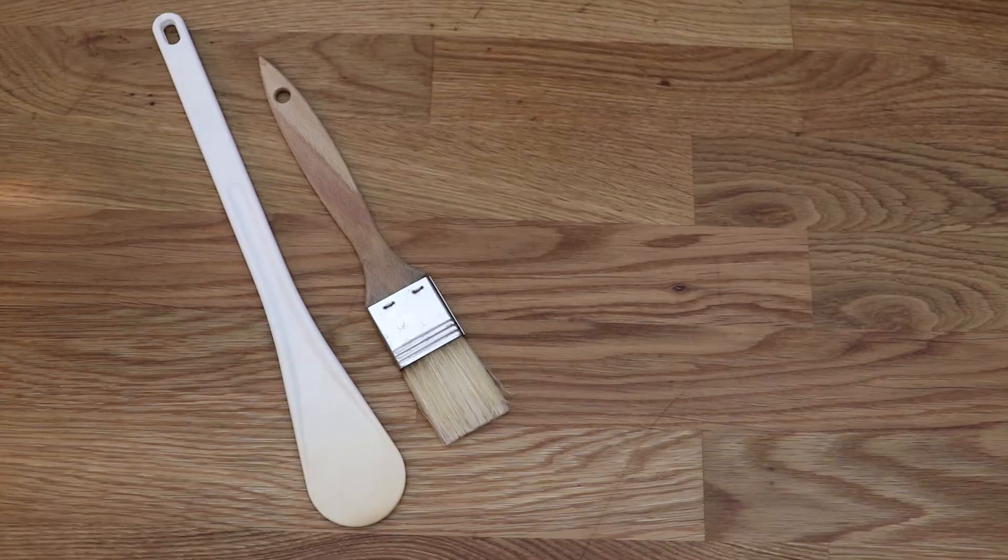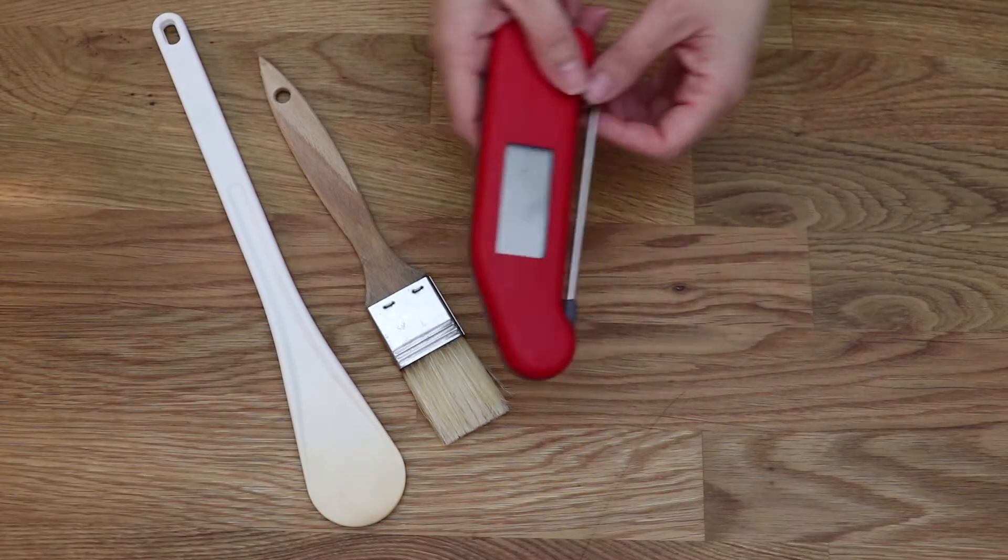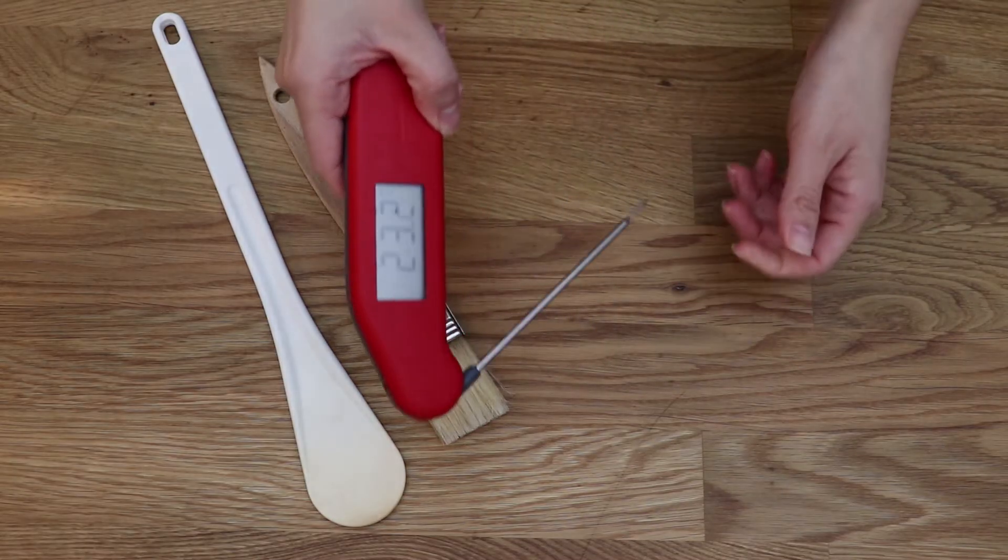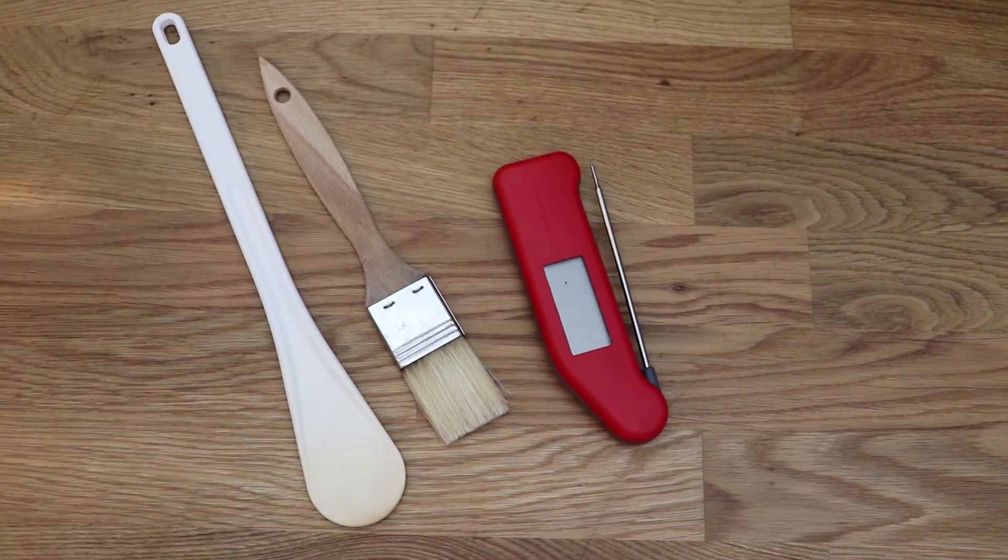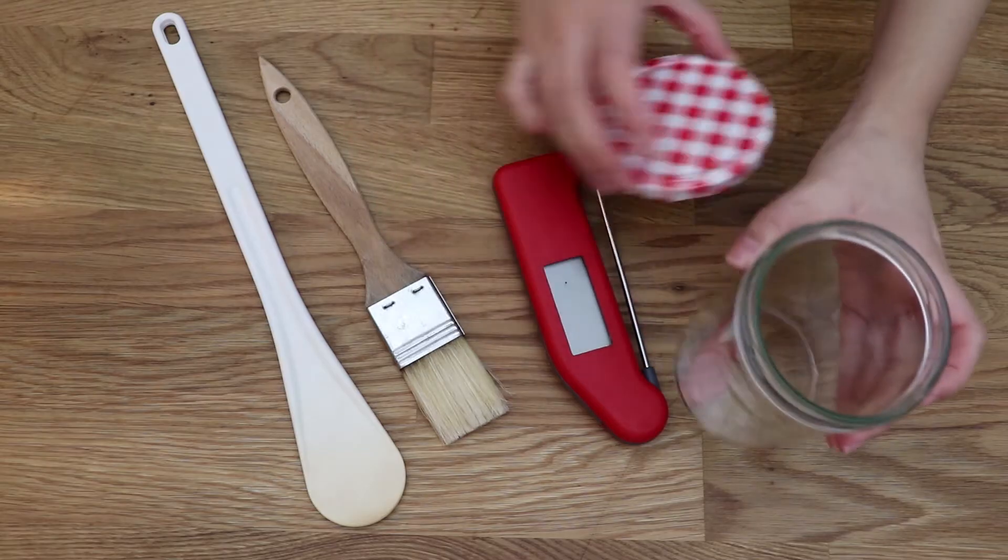And just a quick word on the tools that I'm going to be using. I have a heat resistant spatula, a brush, an instant read thermometer, and a glass jar where I'll be storing my invert sugar.